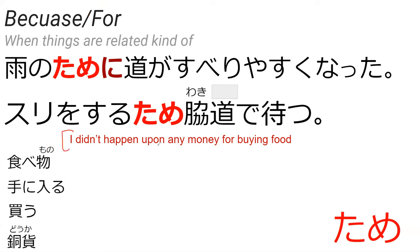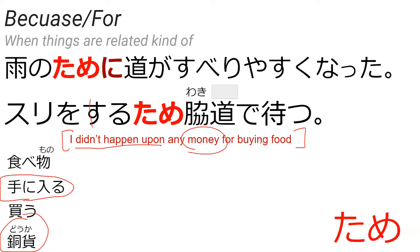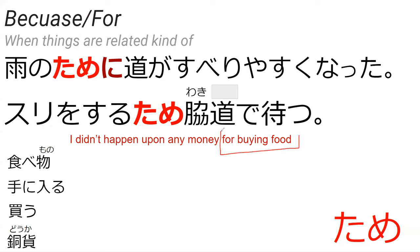So if I want to say 'I didn't happen upon any money for buying food' — the 'I didn't happen upon' is te ni hairu in negative. I decided to translate that more closely to what it actually insinuates. Money is dooka, which is literally copper coins. Buying would be kau and food is tabemono. This is basically one clause — 'for buying food' — and the other is 'I didn't happen upon any money.' How would you say 'for buying food' in Japanese?